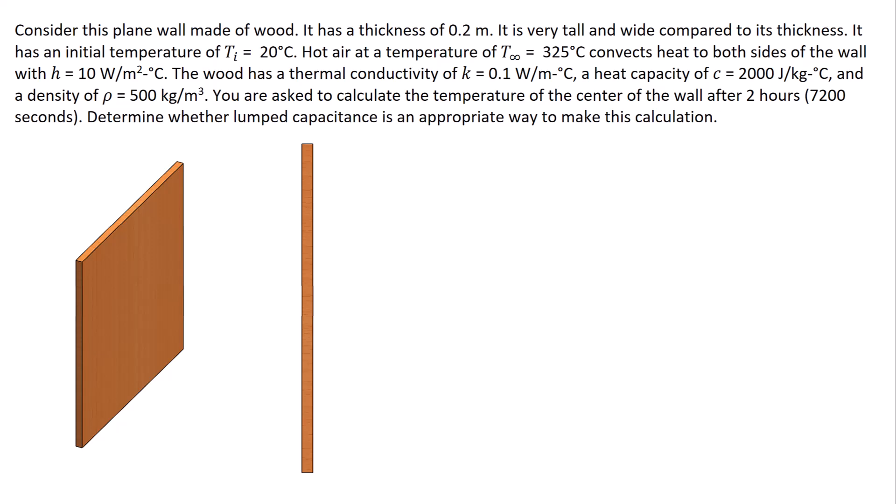Hot air on either side of it with a temperature of 325 degrees C convects heat to both sides of the wall. There's a heat transfer coefficient H of 10 watts per square meter degrees C.